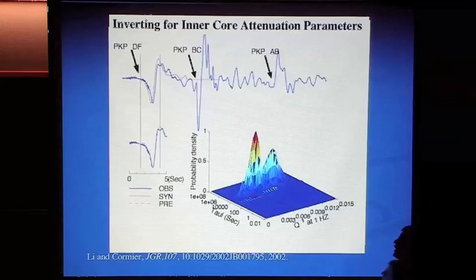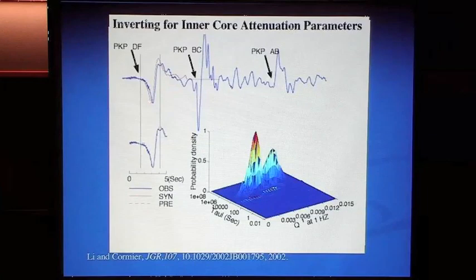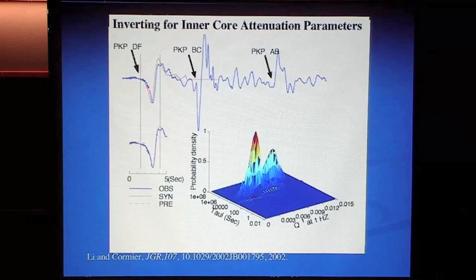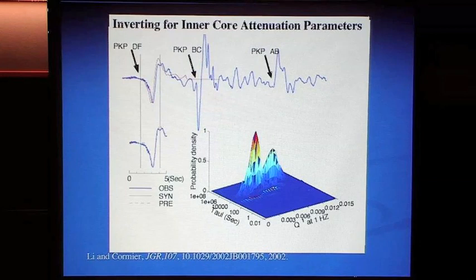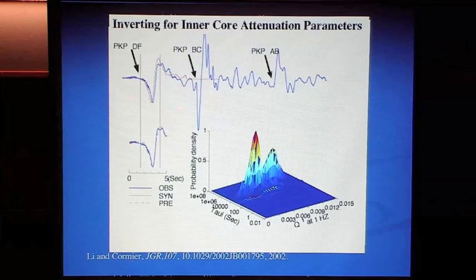Next I'll summarize some results on inner core attenuation — the amplitude-distance decay of different seismic waves and their frequency content. In seismology we try to match amplitudes and frequency contents of different waves. This shows the wave transmitted through the inner core versus one that misses it — clearly showing lower frequency content in the transmitted wave. Rather than comparing two waves, we choose to directly model the complete waveform, getting the shape exactly right in both frequency content and any phase velocity dispersion.